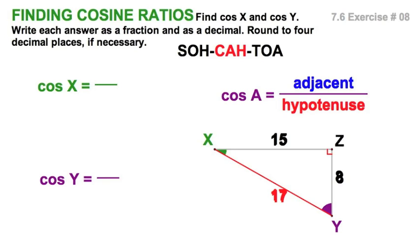You remember that Pythagorean triple. Let's start with the green angle X. I can see that the 17 is clearly the hypotenuse. With respect to this angle X, the adjacent side would be the 15. So the cosine of X is the adjacent over the hypotenuse.